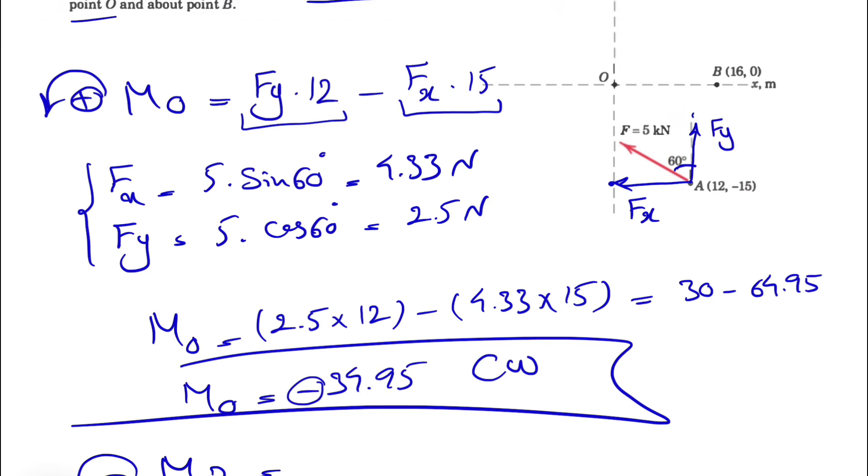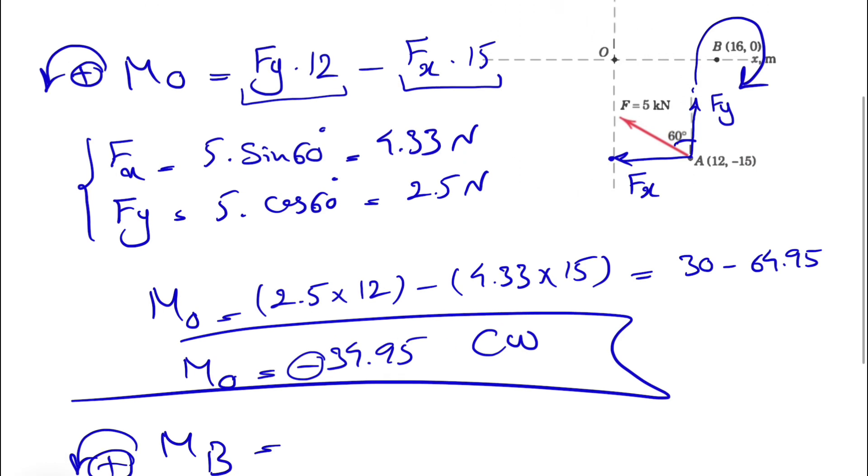Let's find the moment about point B. Again, we call counterclockwise positive. Let's see what we have. We have the moment of FY, which this time will be in this direction about B, so clockwise. We have a negative sign, FY, which we found in the previous part, 2.5, times the distance.